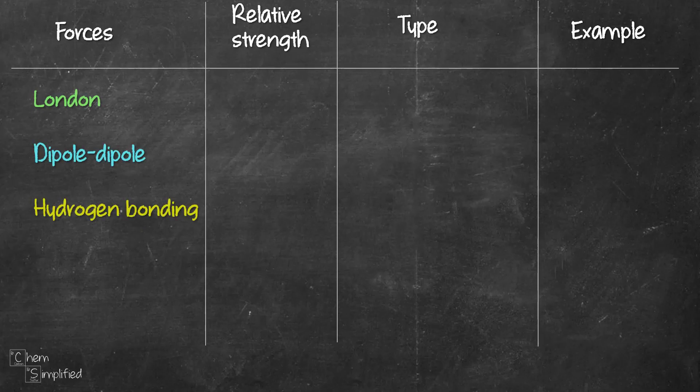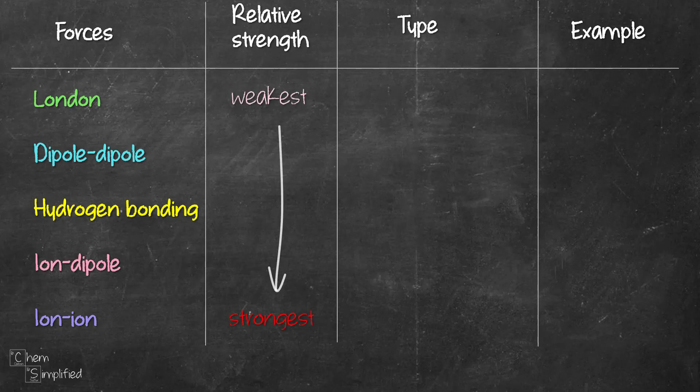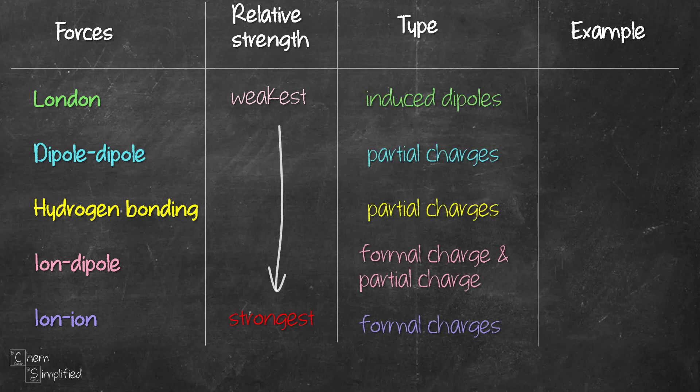To sum it up, we have looked at these five intermolecular forces. The relative strength increases from London forces all the way down to ion-ion forces. The relative strength has to do with the type of electrostatic charges between the molecules. With that, we're done going through the five intermolecular forces.